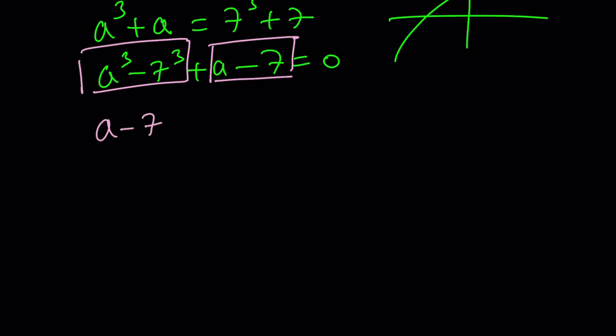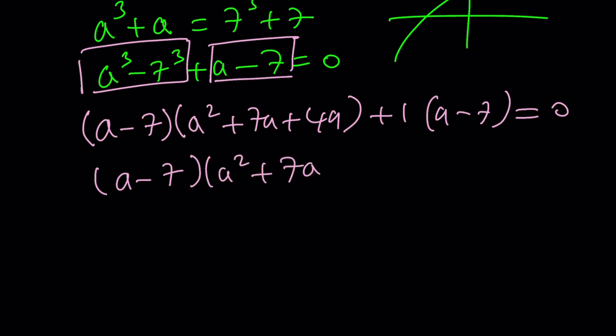If you factor using difference of two cubes, I hope you know the formula: (a - 7)(a² + 7a + 49), which is 7², plus 1 times (a - 7) = 0. This gives you the same thing. a - 7 is a factor. Then you get a² + 7a + 49 + 1, which is + 50 = 0.